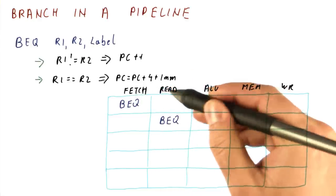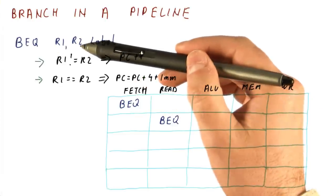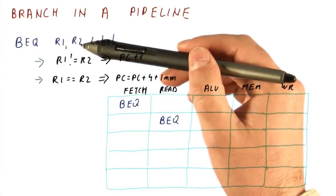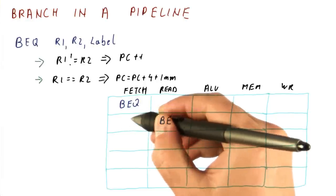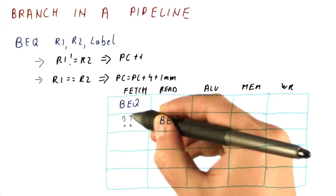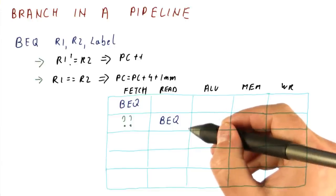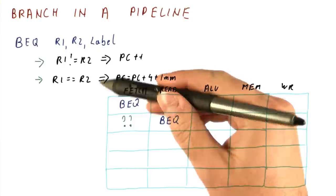In the second cycle, the branch moves here where it reads the operands. So it's reading R1 and R2, but we have no chance of telling whether the branch will be taken or not. So we either don't fetch anything here or we fetch something here. Let's say we fetch some sort of a green instruction here. At the end of this cycle, we still don't know whether the branch will be taken. We have now read R1 and R2, but we haven't compared them yet.